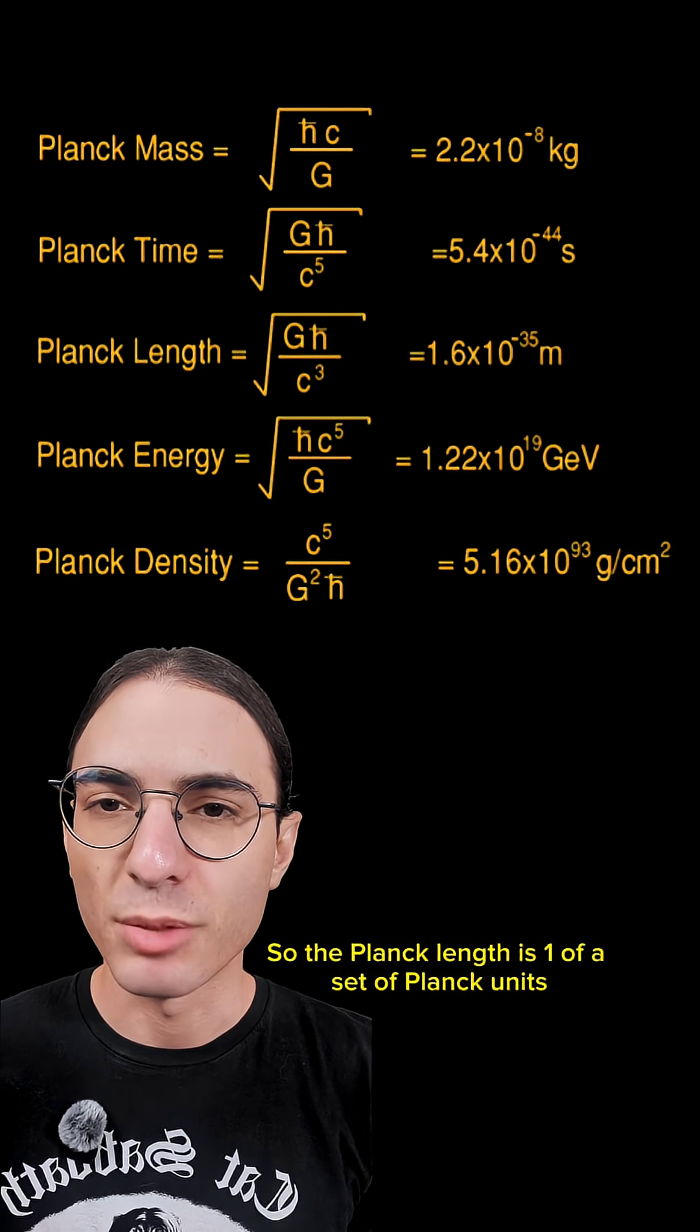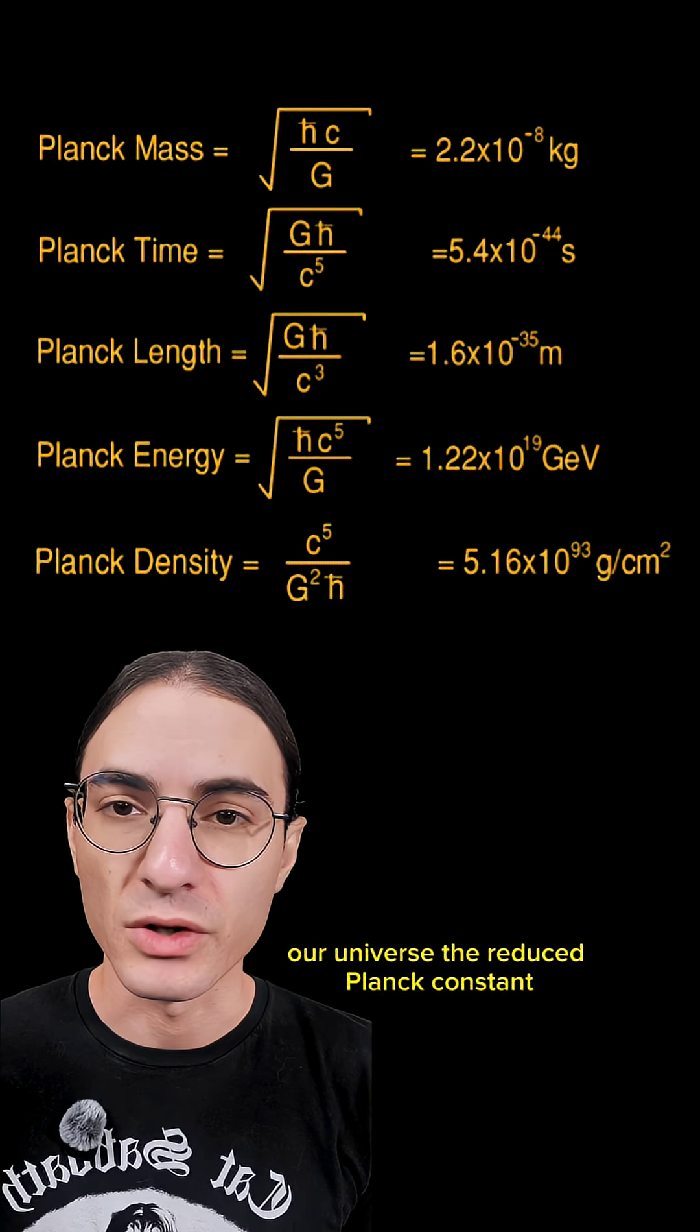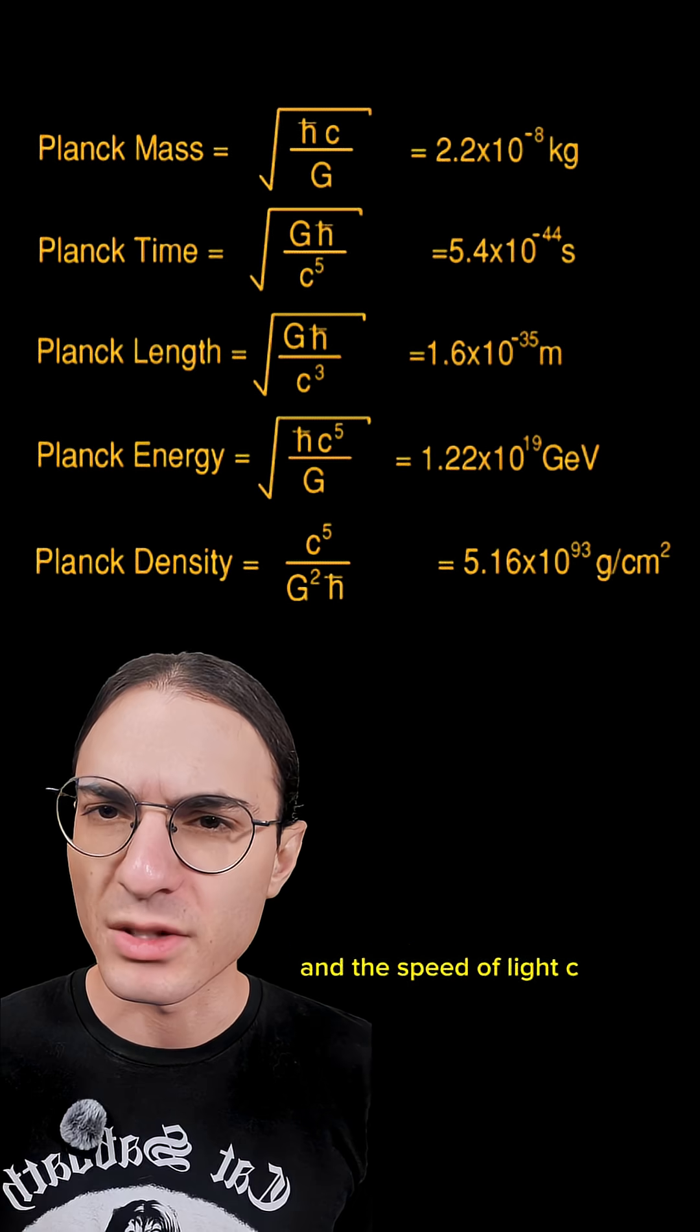So the Planck length is one of a set of Planck units. These are units built from the fundamental constants that describe our universe: the reduced Planck constant h-bar, Newton's gravitational constant big G, and the speed of light c.